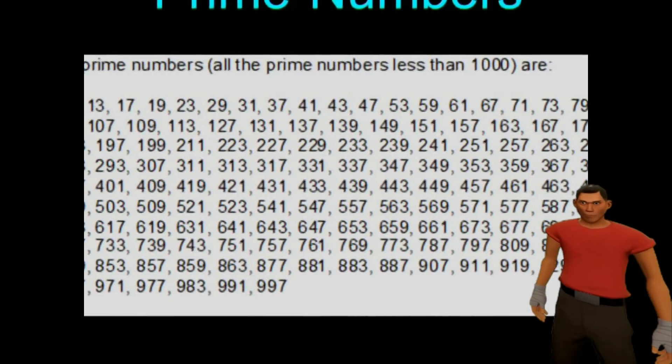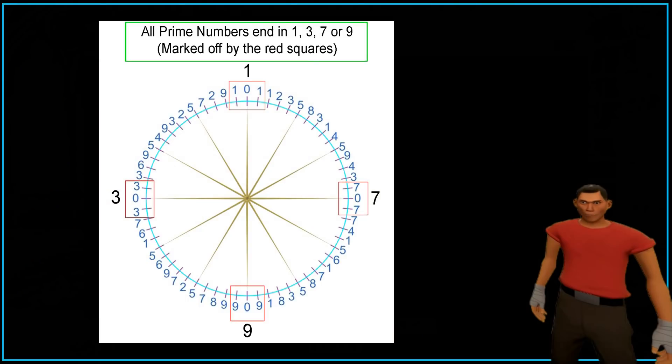And once again, if we look at our 60 digit cipher, you can see that the prime numbers have a special place around the four cardinal points or zeros. This cipher is absolutely incredible.